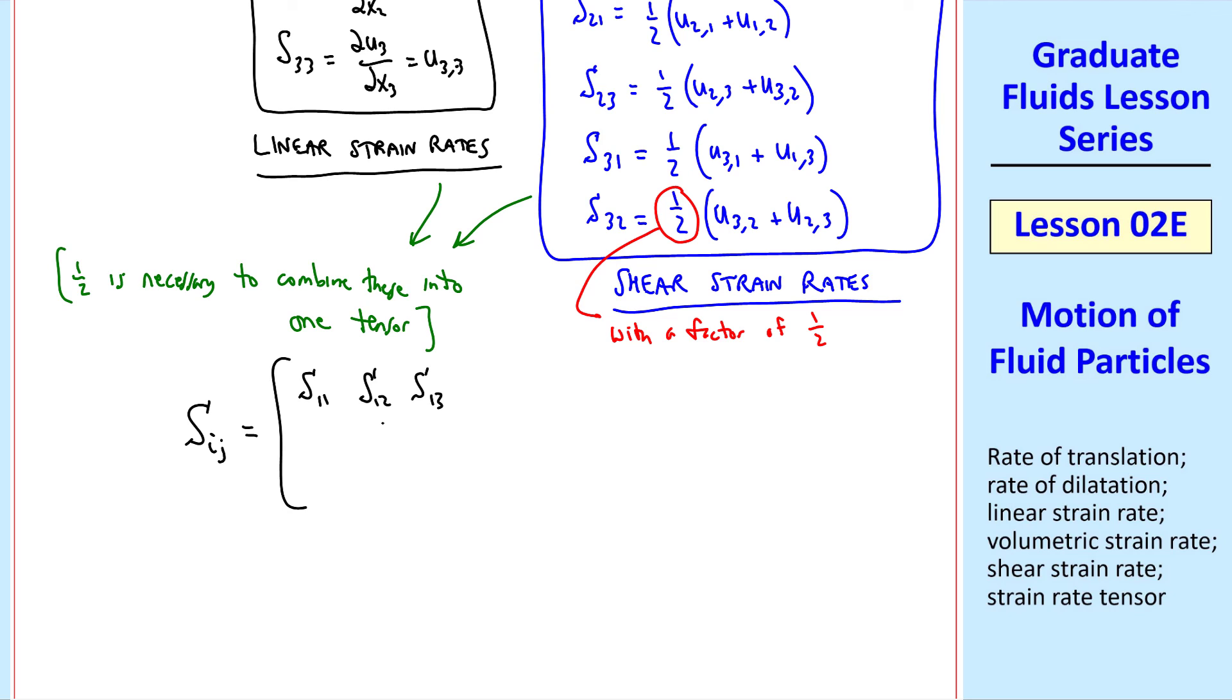We write this one tensor then as capital Sij, writing it in matrix format, S11, S12, S13, S21, S22, S23, S31, S32, S33.